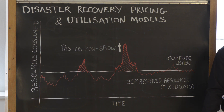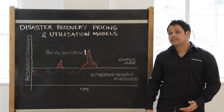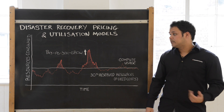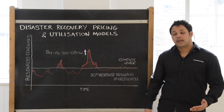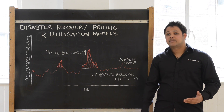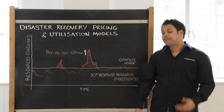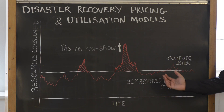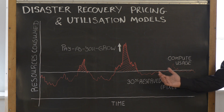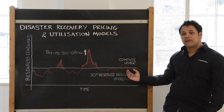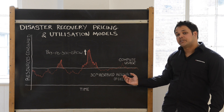So companies are paying for disaster recovery now on a utilization model based on the amount of resource they're using in the cloud, based on storage, connectivity, and compute. On the right hand side here, this shows Databarracks' utilization model for disaster recovery where we would set a 30% reservation of compute.